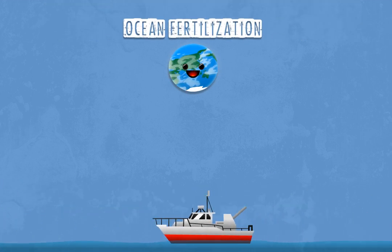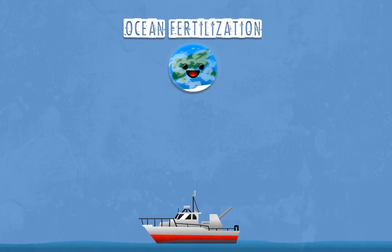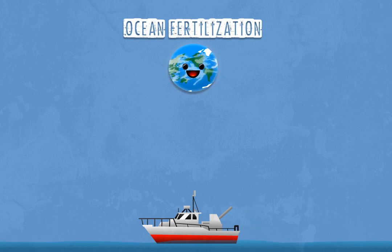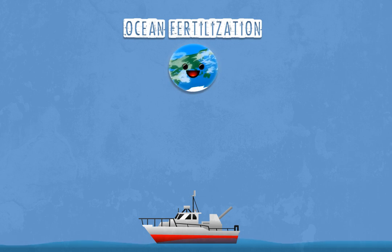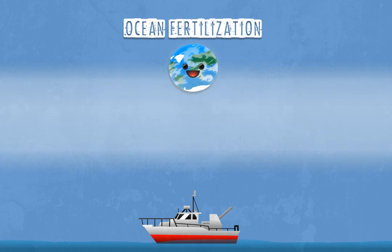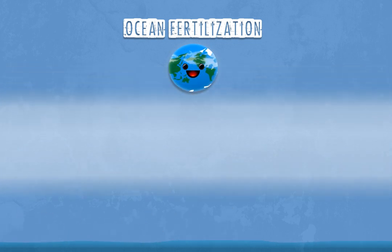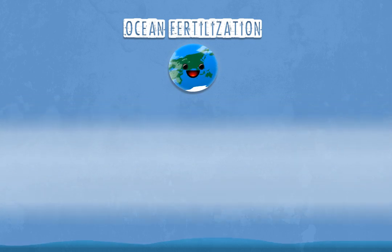Ocean fertilization is basically to take a bunch of iron, urea, or phosphorus and dump it into the ocean. Another possible objective of ocean fertilization is to produce more sulfate aerosol in the atmosphere and so increase the amount of sunlight being reflected by clouds, cooling the Earth. At least, that's the theory.